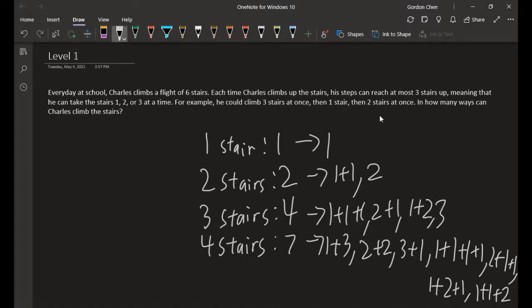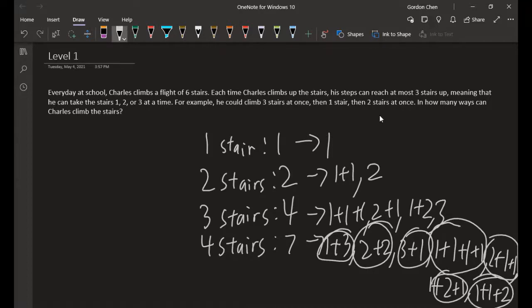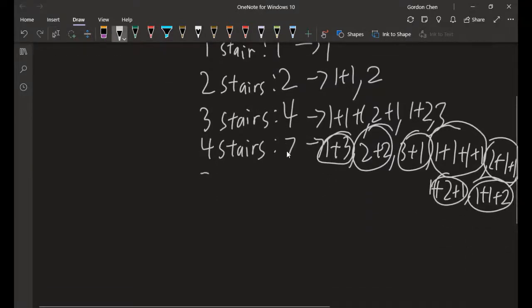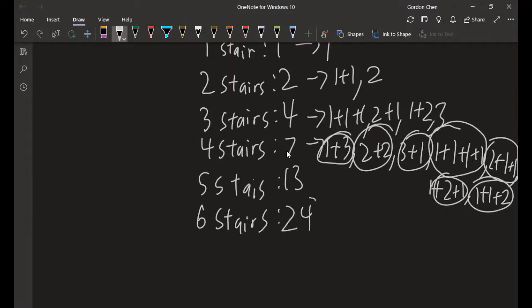As we can see here, we have one, then two, and for three we have a total of four. So that is one plus two plus four. Similarly, for five stairs we have two plus four plus seven, which is thirteen. So for six stairs we have four plus seven plus thirteen, which is twenty-four.